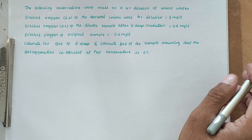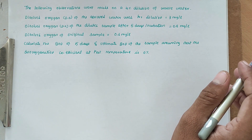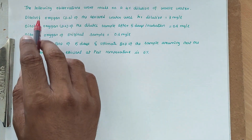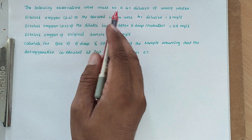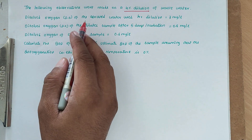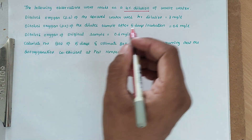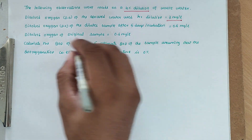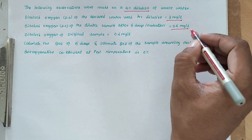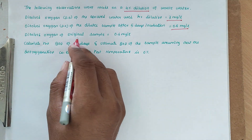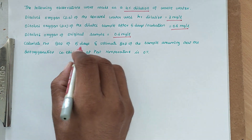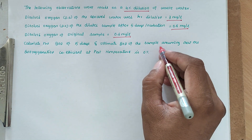Hello friends, welcome to Student Engineering Exam. Today we are going to see a problem related to wastewater engineering in the topic of deoxygenation. The problem is: the following observations were made of a 4% dilution of wastewater. Dissolved oxygen of the aerated water used for dilution is 3 mg/L. Dissolved oxygen of the diluted sample after 5 days of incubation is 8 mg/L. Dissolved oxygen of the original sample is 0.6 mg/L. Calculate the BOD after 5 days and the ultimate BOD of the sample.